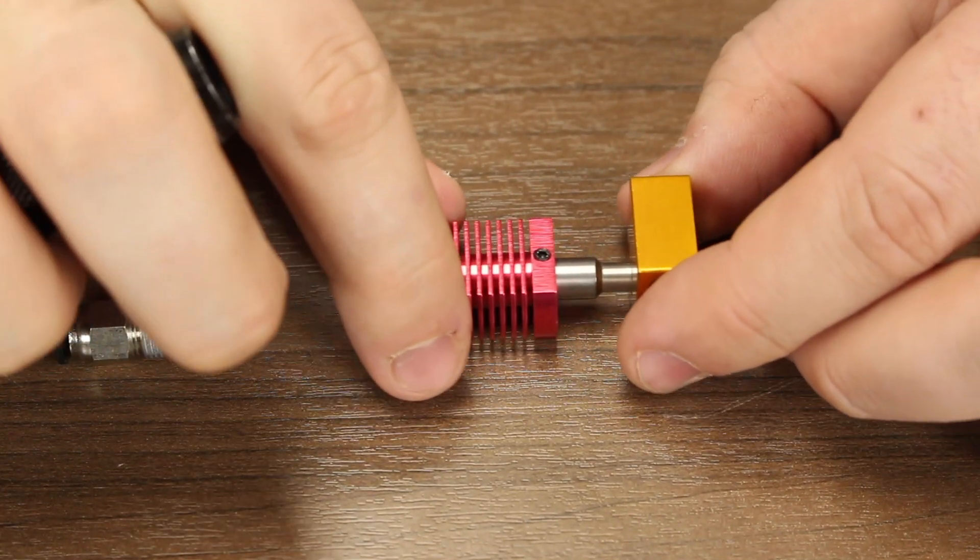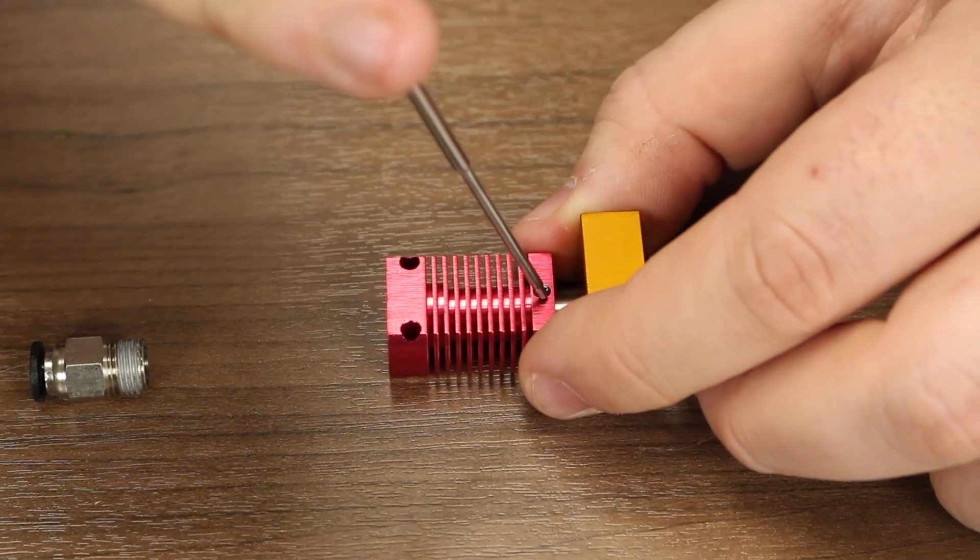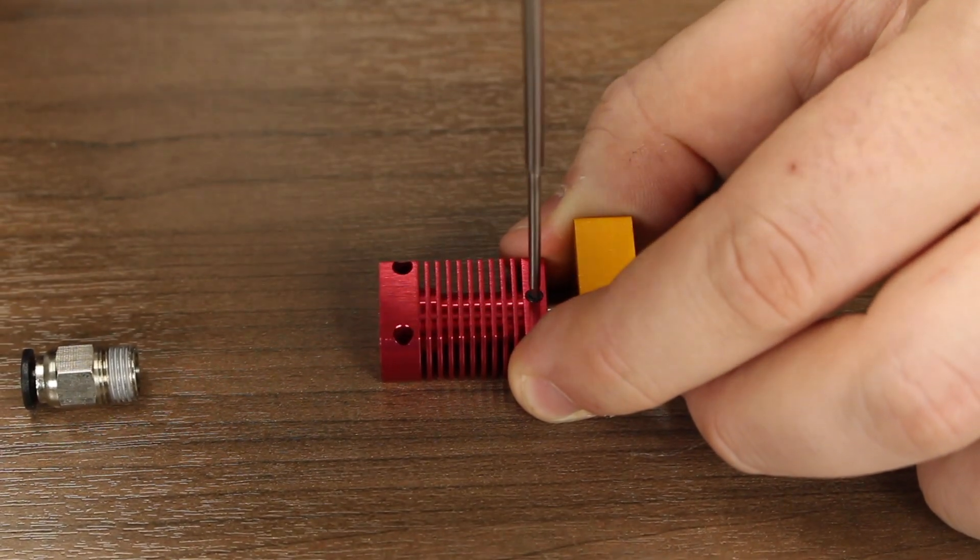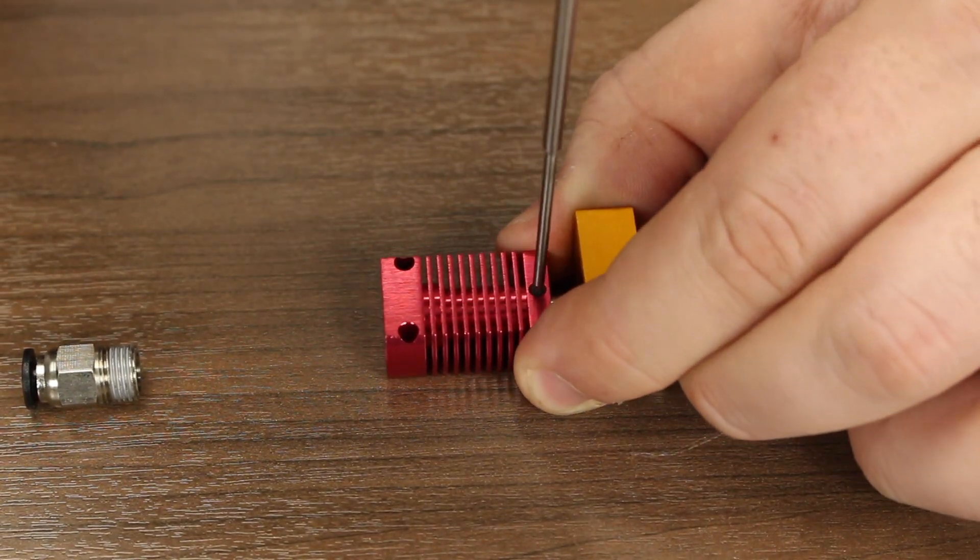The Creality heat sink is not threaded. All you do is slide it in and then tighten it with an Allen key. Just like pretty much everything with hot ends, make sure you don't over tighten.